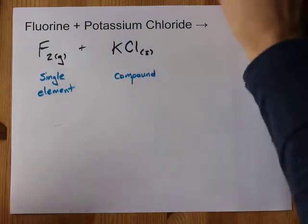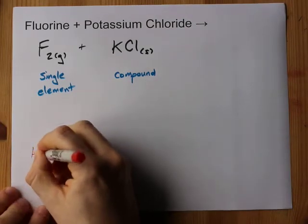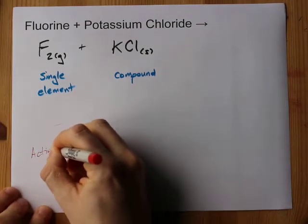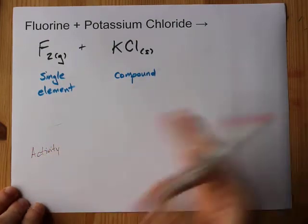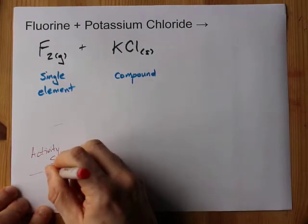Now you need to look this up on what's called the activity series. The activity series for halogens is maybe not even given to you as a separate table, because it's exactly as found on the periodic table.